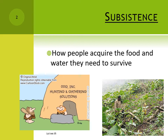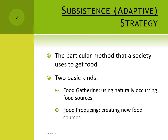Food affects everything. Broadly speaking there are two kinds of subsistence strategy – what your textbook calls adaptive strategy. Food gathering and food producing. Your textbook refers to food gathering as foraging, but I'm going to reserve that for a particular kind of food gathering that we'll get to in a moment.